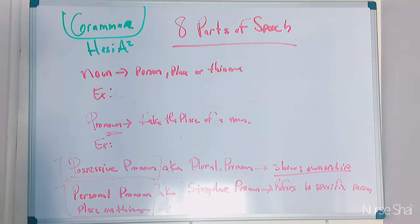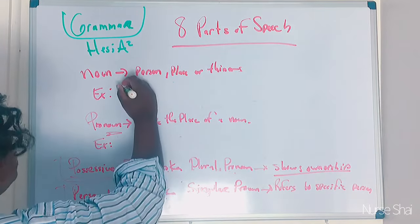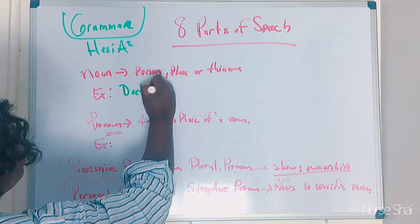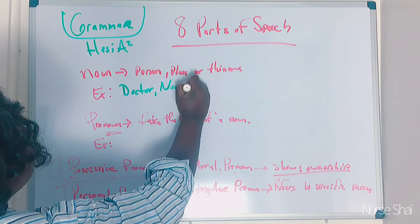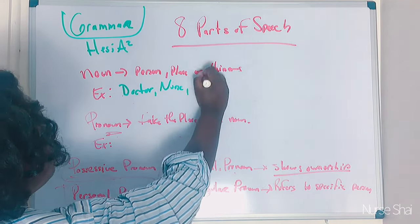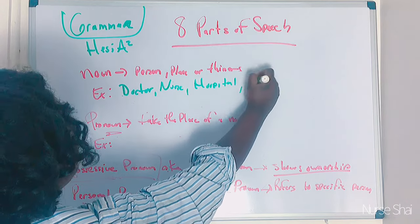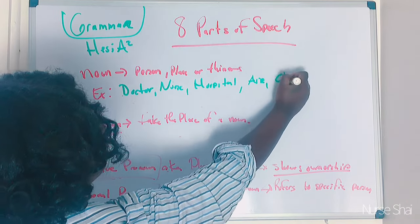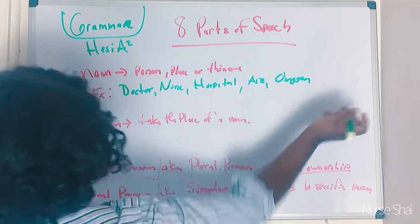Everybody knows what a noun is. A noun is a person, place, or thing. An example of a person would be like a doctor or a nurse. A place would be like a hospital. A thing would be like air, oxygen, stuff like that.